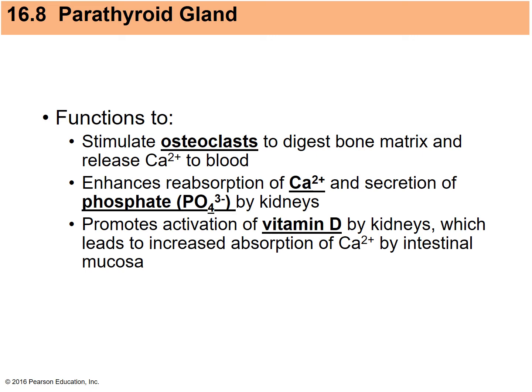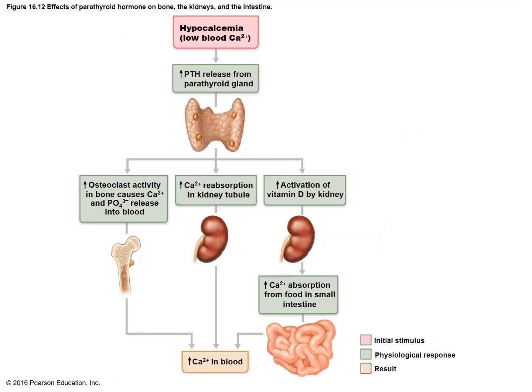All of these PTH actions — on bone, kidneys, and intestines — are aimed at increasing the level of calcium in the blood. This diagram shows the effects of parathyroid hormone on the bone, kidneys, and intestines. The stimulus is low calcium concentration in the blood, and the goal is to get it back up.